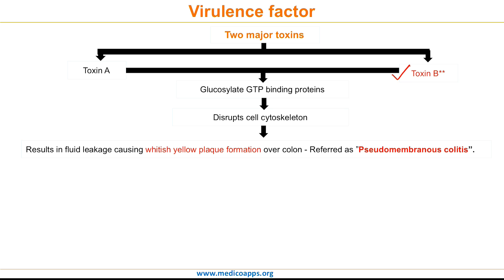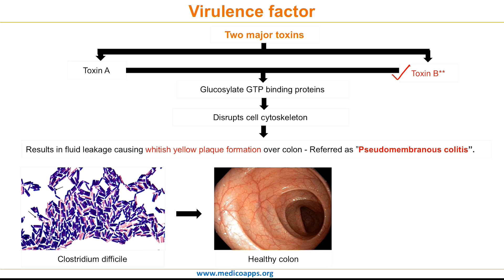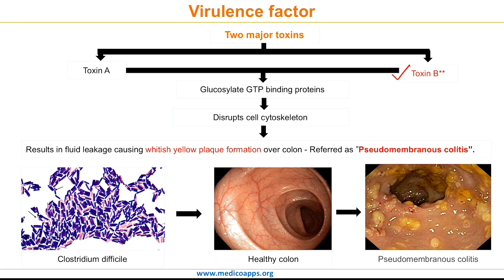This yellowish plaque is also called pseudomembranous colitis. Here is Clostridium difficile, the gram-positive anaerobic bacilli; this is what a normal healthy colon looks like; and this is how pseudomembranous colitis — the white-yellowish plaque — looks on colonoscopy.